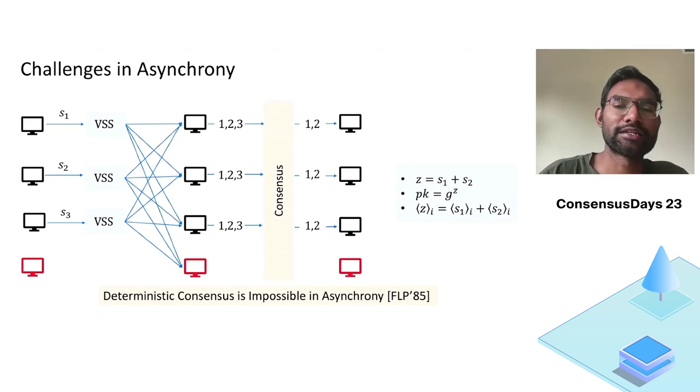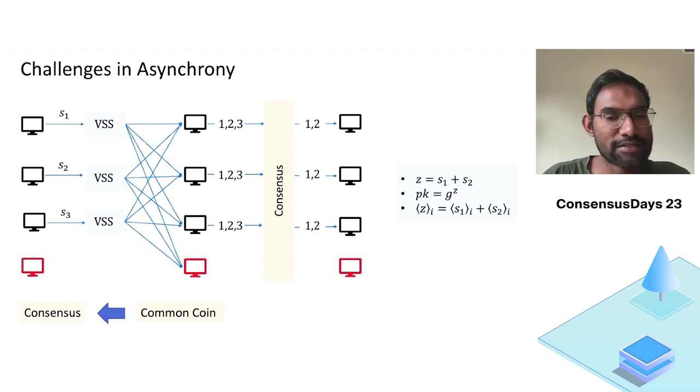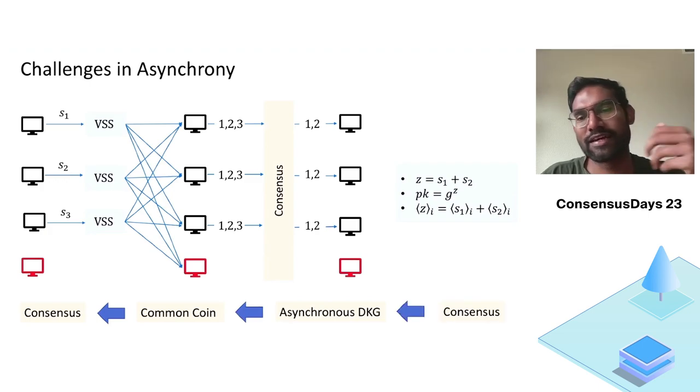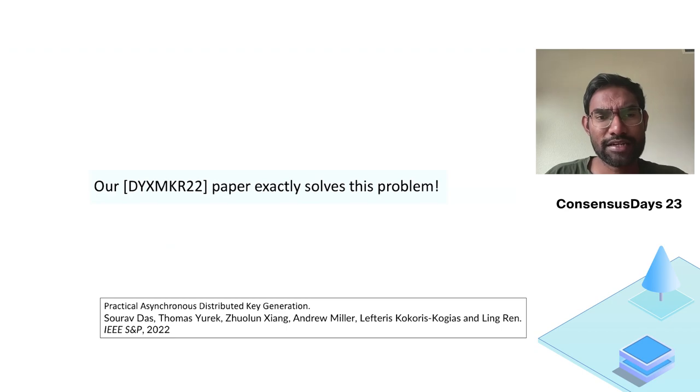But many of you might know that deterministic consensus is impossible in asynchrony. Typically consensus requires a shared common coin, and the common coin, most of the existing common coins in asynchrony require DKG, and we now see that DKG needs consensus. So there's a circularity. We can break this circularity. We will break this efficiently in one of our previous constructions, and if you're interested, I will encourage you to look at that.